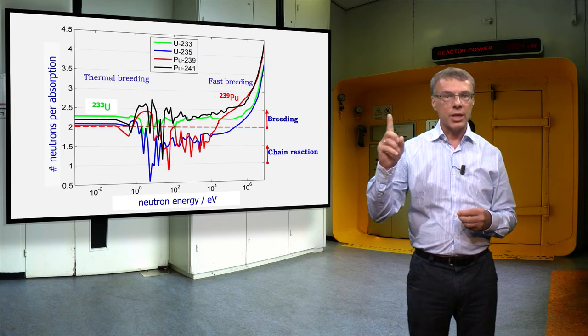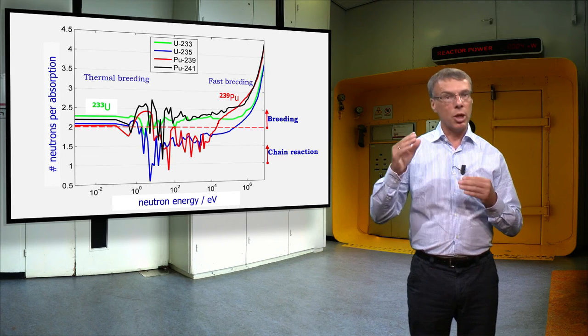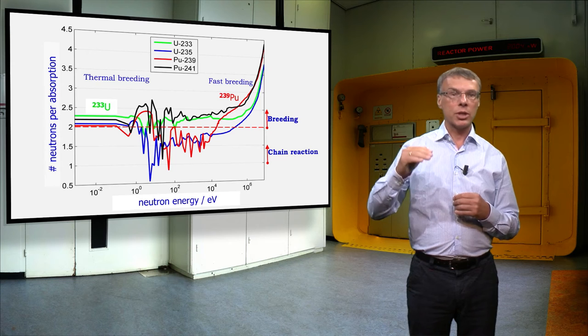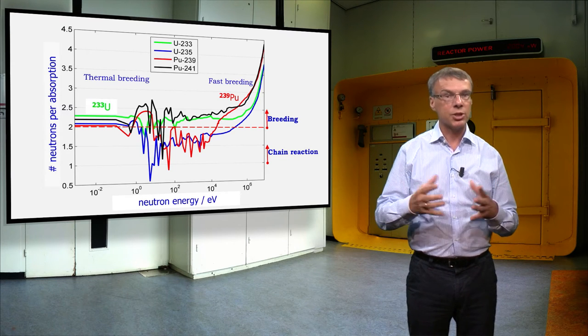For a stationary fission chain reaction, the value of the number of neutrons per absorption should be larger than unity, because at least one new neutron is needed for a fission event in the next generation.